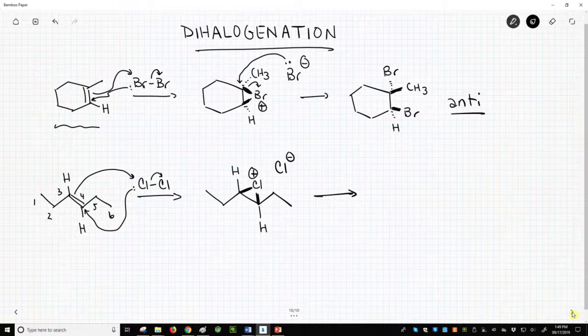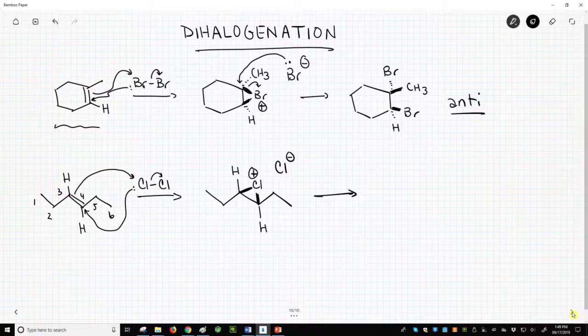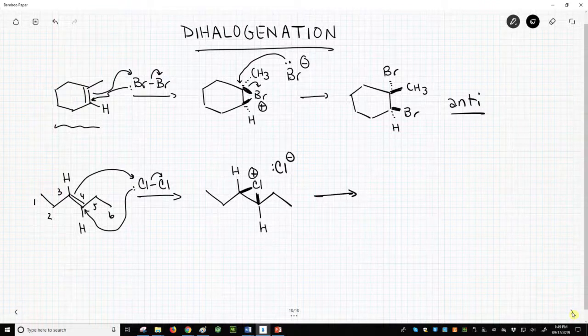When the chloride opens up the chloronium ion ring, it will attack from the back face opposite of the first chlorine. I'll arbitrarily attack on carbon 4.